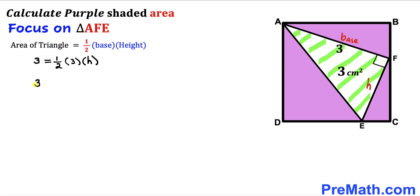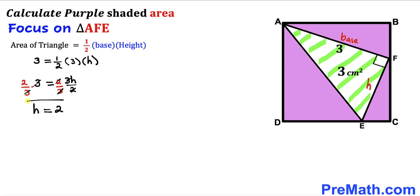Let's fill in the formula. We have area 3 equals one half times base 3 times height h. Simplifying: 3 equals 3h divided by 2. Multiplying both sides by 2/3 to isolate h, the 3s cancel on both sides, giving us h equals 2 cm. So this side length EF turns out to be 2 cm.